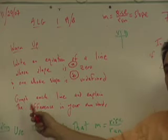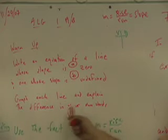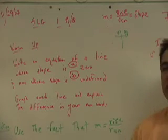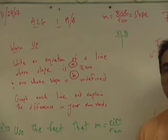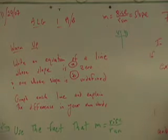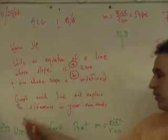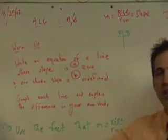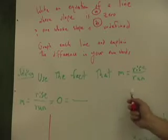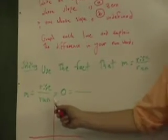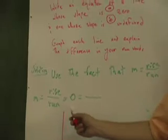And on top of that, you have to graph each line and explain the difference in your own words of the two different types of lines and the graphs and equations and everything that has to do with them. Well, people are getting stuck. I've given some hints. Here's my hints in green. Here's the first thing you can think about is the fact that we've given you the slope, M. Use the fact that M is rise over run. And in this case, that's zero. Rise over run is zero. What does that mean in terms of a fraction?